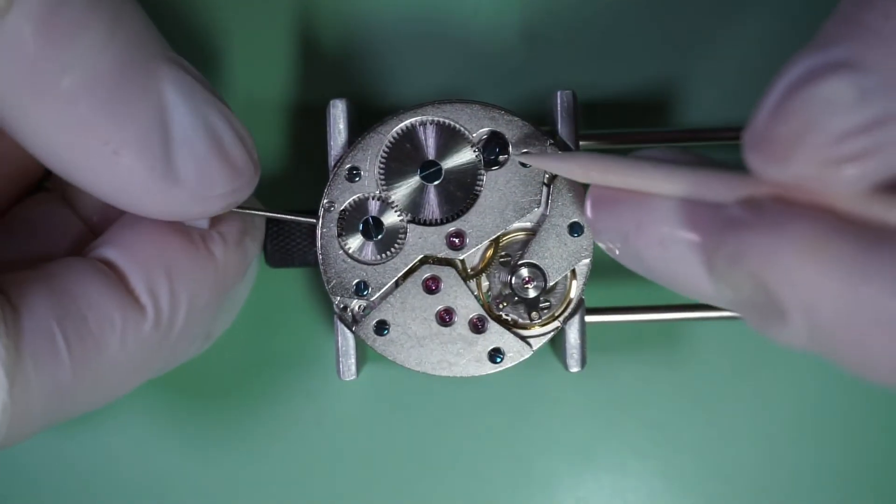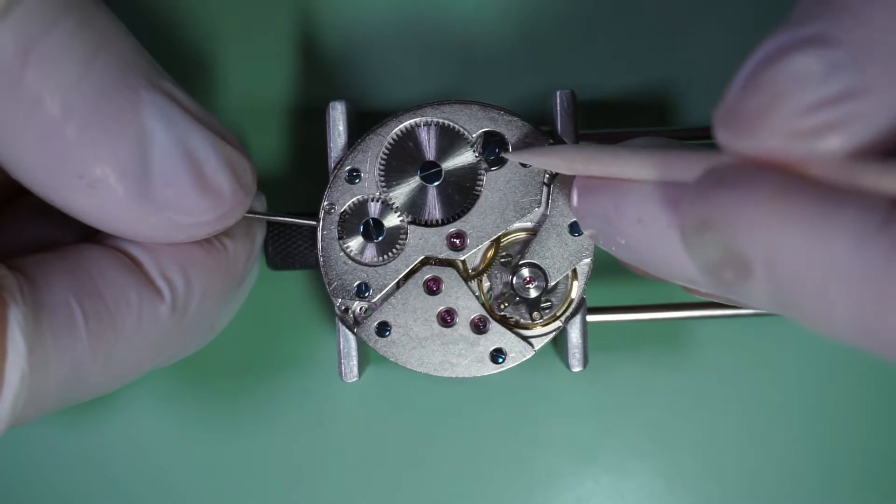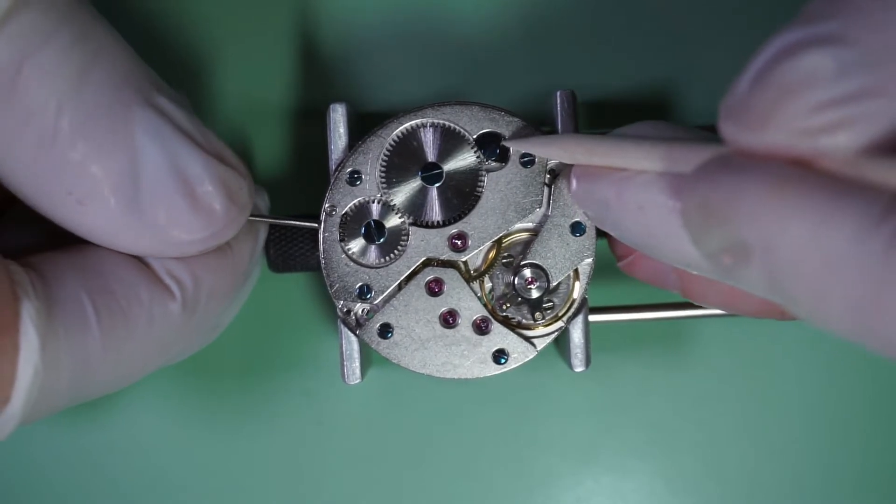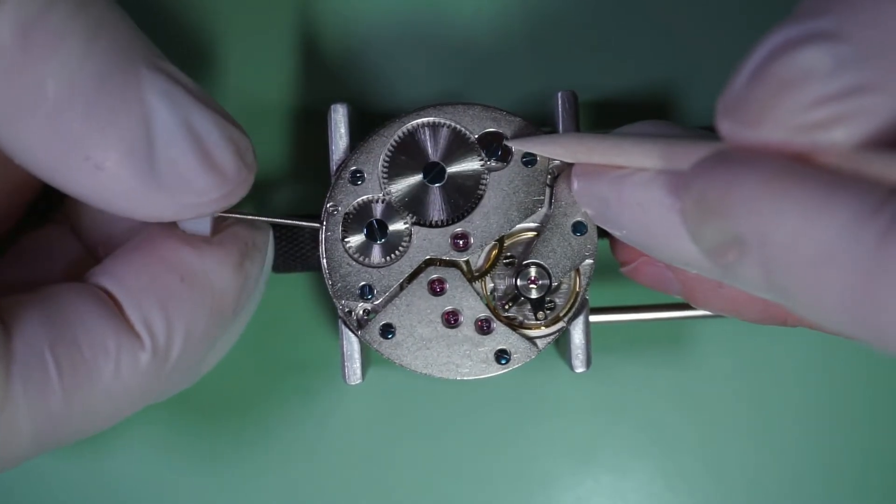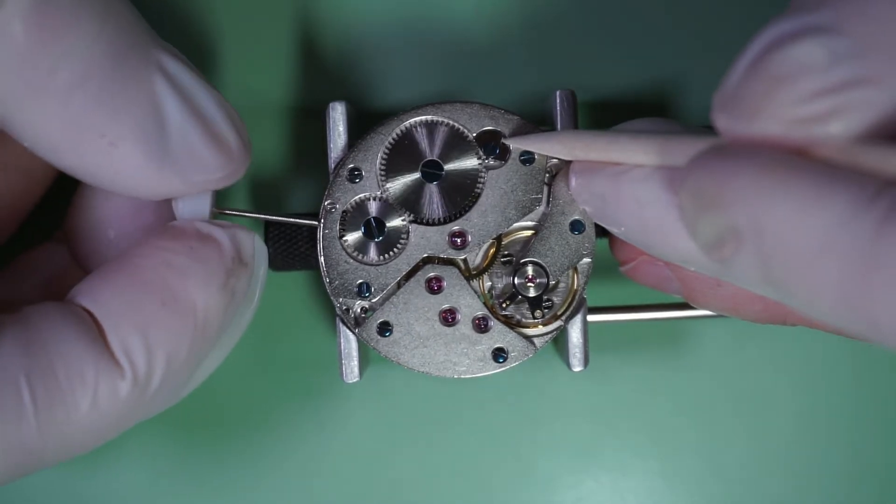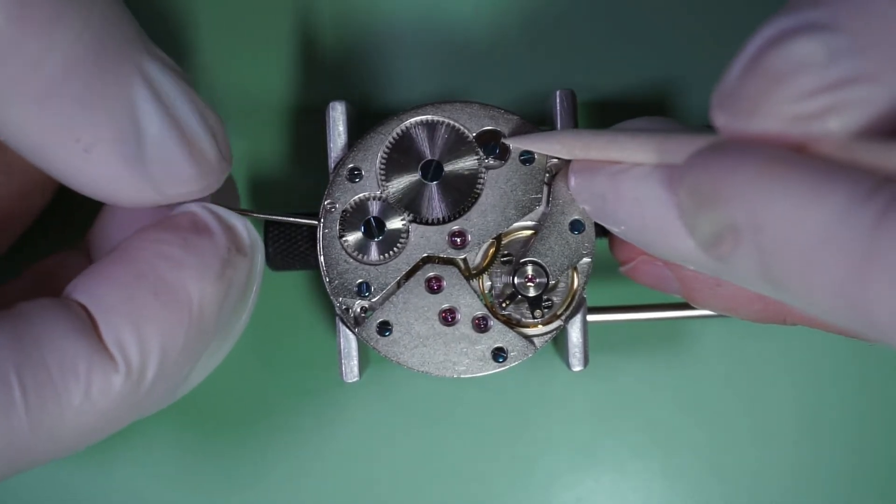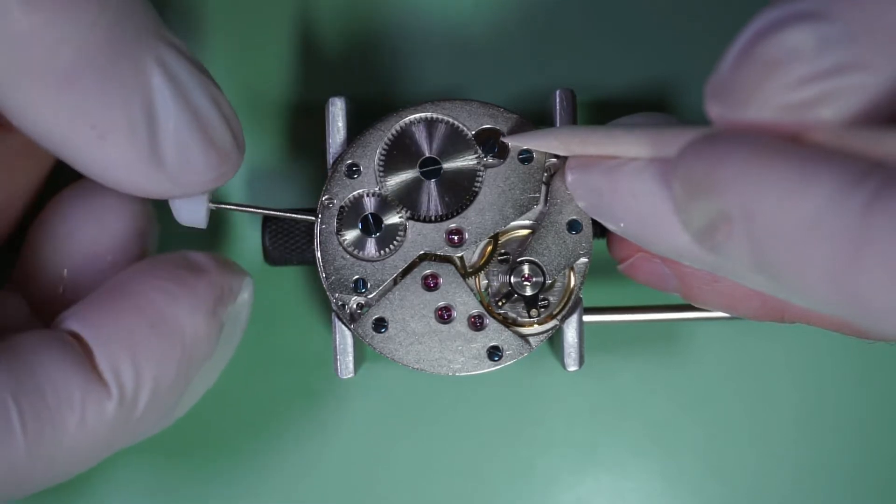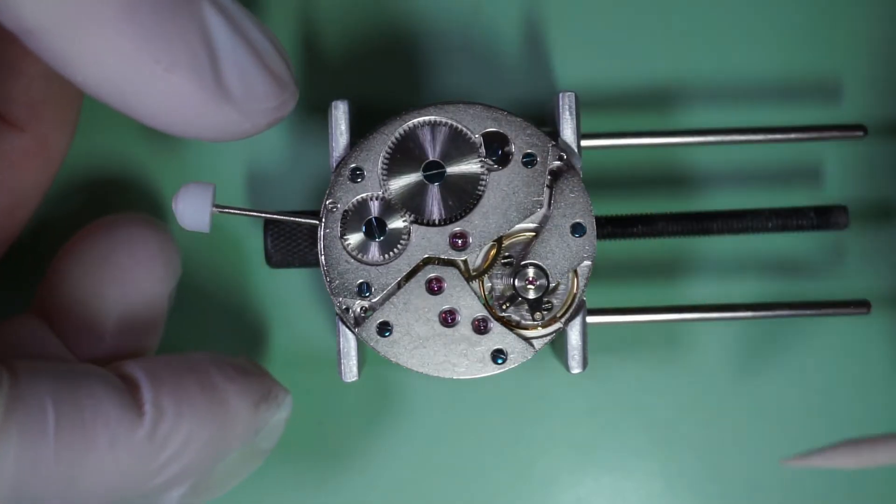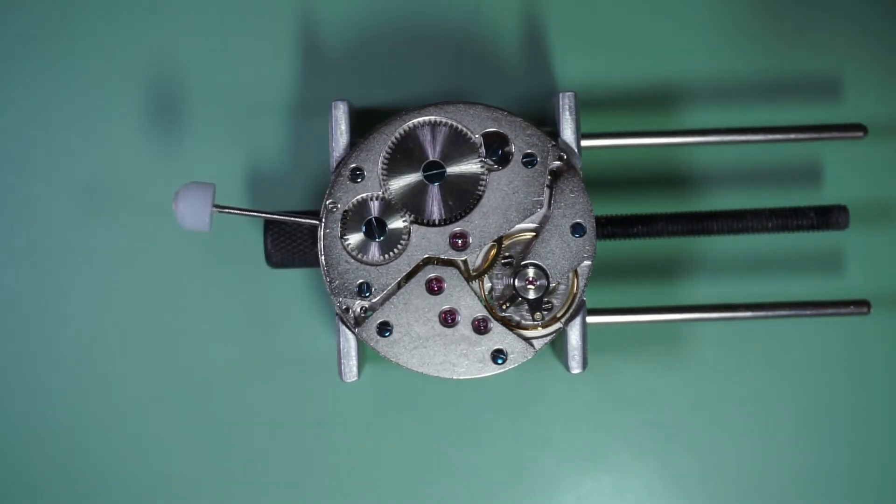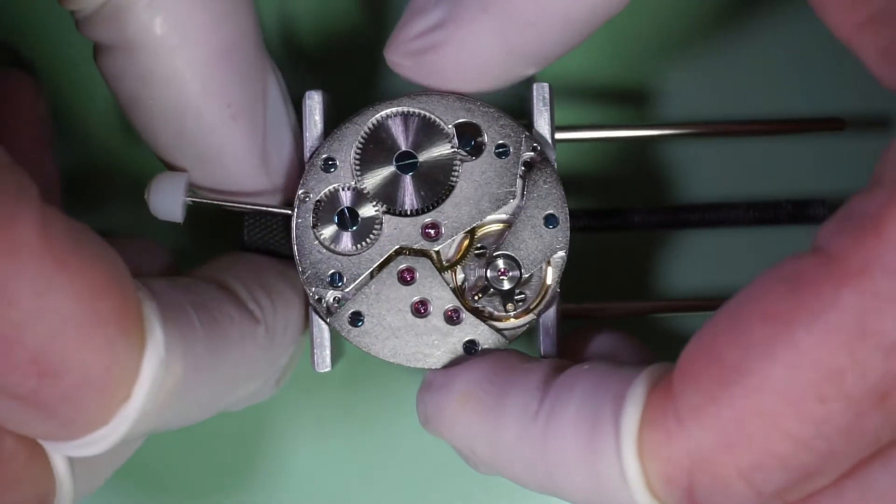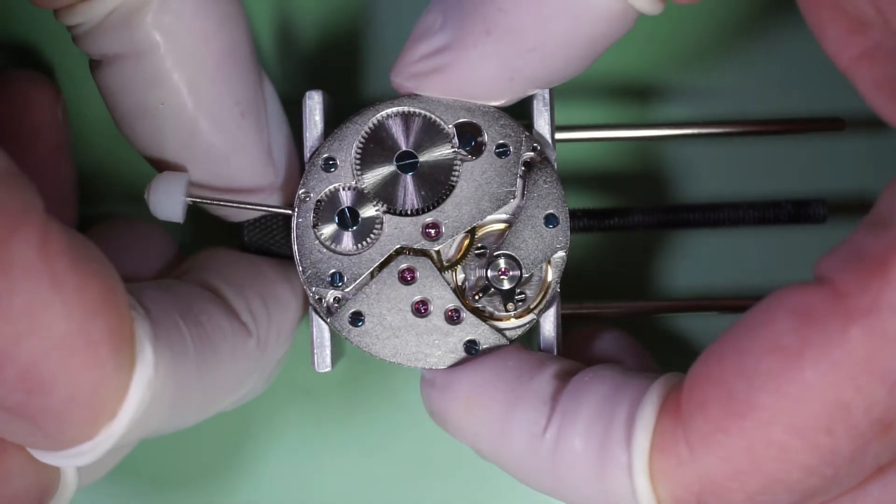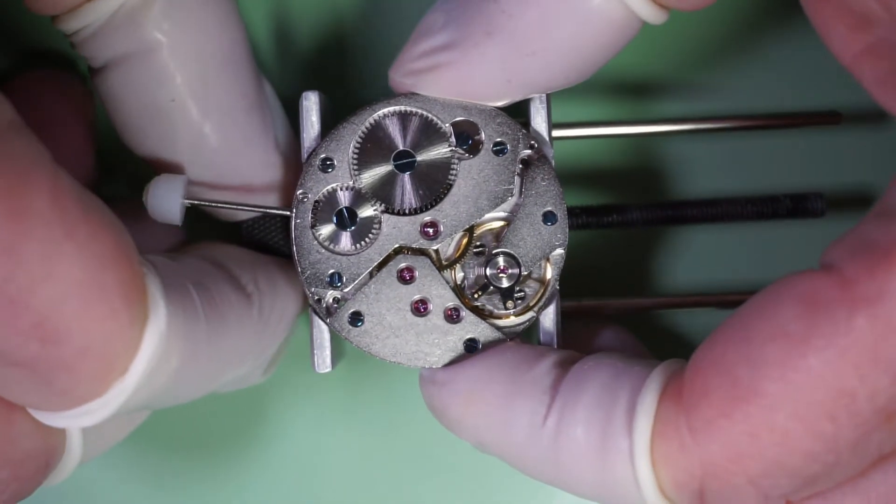So the first thing I need to do is release the tension in the mainspring and I'll do that by holding the click back with a piece of pegwood and slowly releasing the tension by holding on to the winding stem. And we'll just wait for the balance wheel to stop moving.